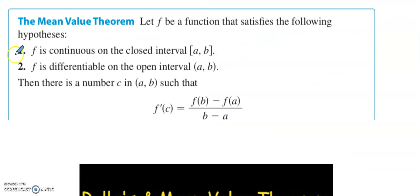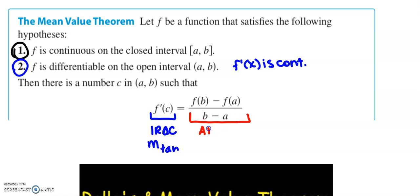So our function still has to be continuous. Our function still has to be differentiable, which again, one more time, that means that f'(x) is continuous. We want to check for discontinuities. Then our instantaneous rate of change, which is the slope of the tangent line, will be equal to the average rate of change, which is the slope AROC, which is the slope of the secant line.